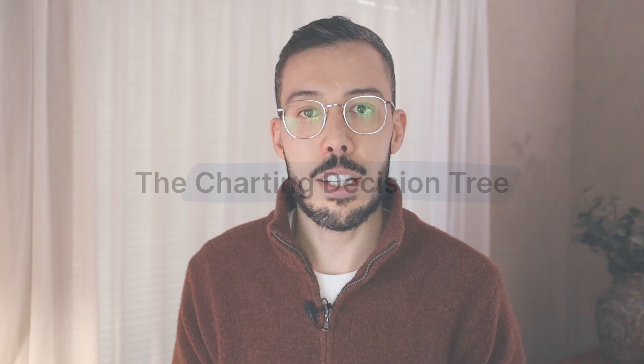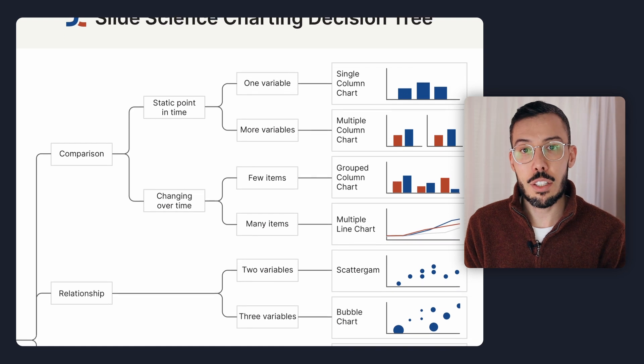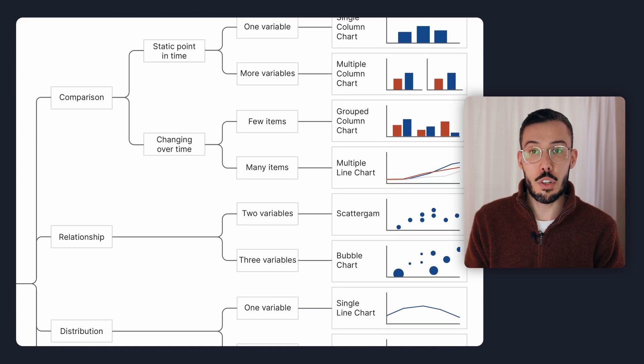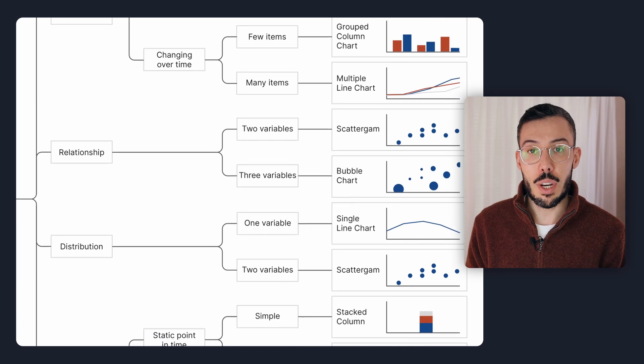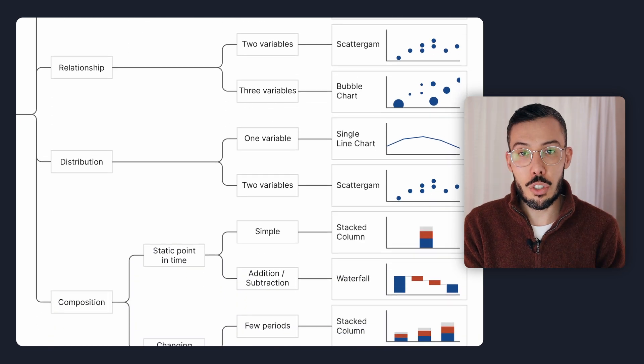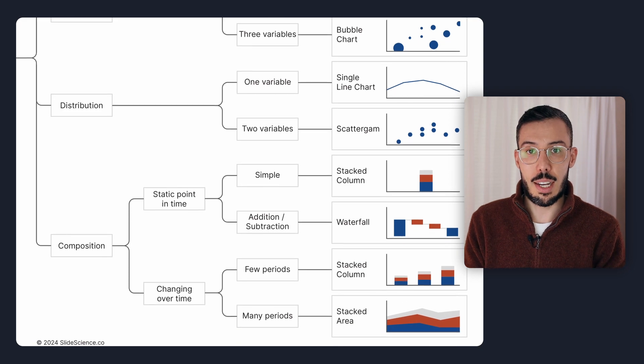Now let's talk about the charting decision tree. The only thing you need to know is what insight you're trying to show: is it a comparison, a distribution, a relationship, or a composition? Once you identify which one, you open the decision tree, follow the decision lines, and it shows you the perfect chart for your data. You can download the decision tree for free in the description below, and if you have any questions drop them in the comments and I'll answer them.